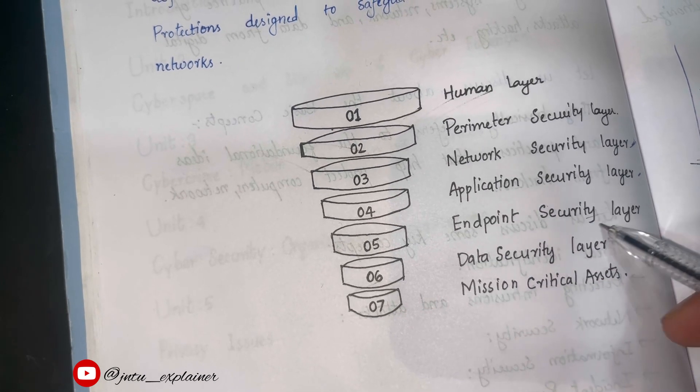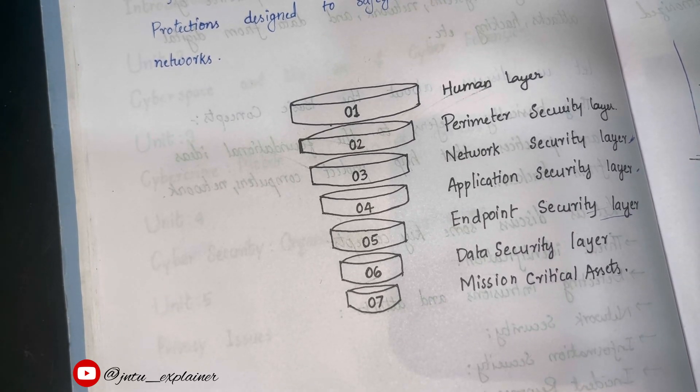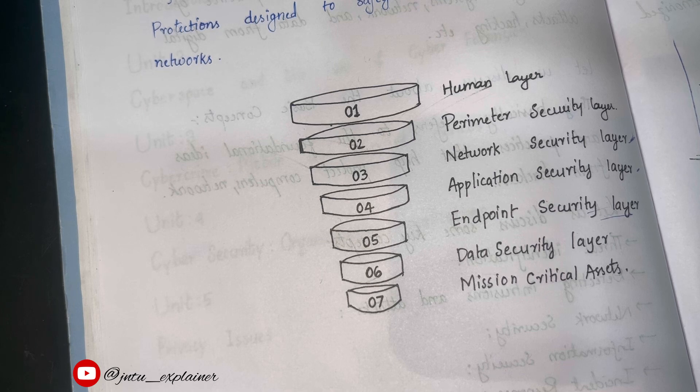The fifth security layer, endpoint security layer. The endpoint security layer concentrates on safeguarding the individual devices that connect to the network. We all know what is endpoint security layer. Endpoint is something which has reached this point, endpoint.